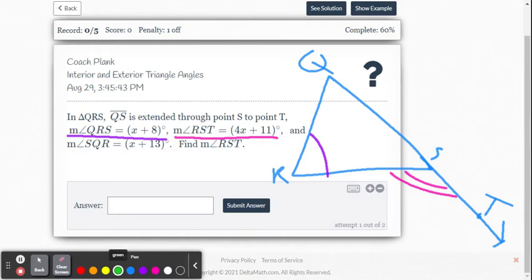And then they want us to find, they also give us, I should say, the measure of SQR, angle SQR. And that's this angle here. So what do they give us? They gave us two measures of remote interior angles, and they gave us the exterior angle.